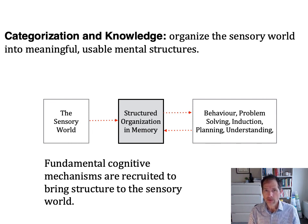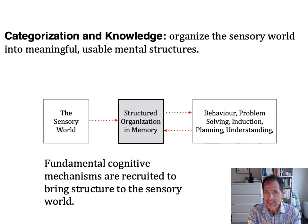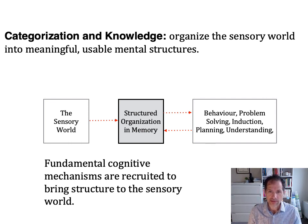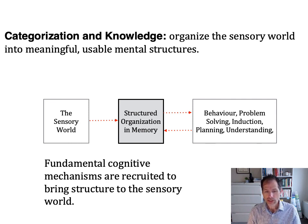So up until now, we've been discussing sensation and perception and low-level vision and the extraction of features from the perceptual world. What I want to talk about now in this lecture and for the next few weeks is how we organize that information into different kinds of representations in our memory. These structured representations allow us to carry out other things like our behaviors and problem solving, making inductive inferences and plans and understanding the world. So we're going to talk about some of the fundamental cognitive mechanisms that are recruited to bring structure to this sensory world.